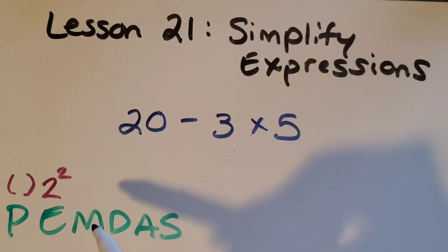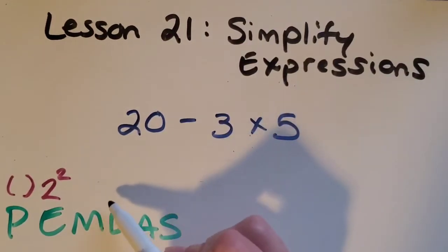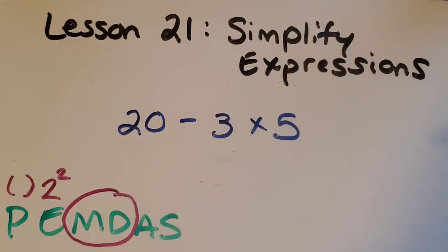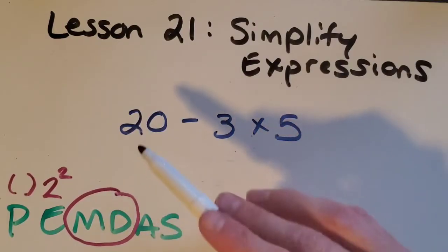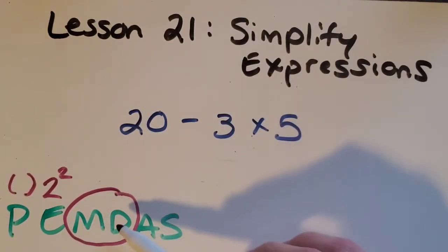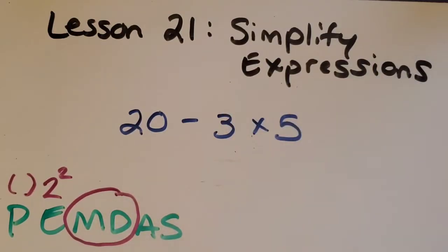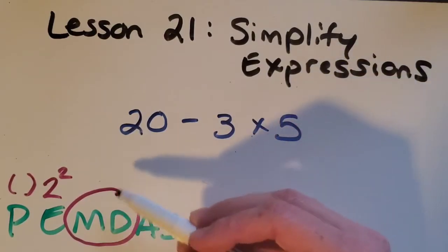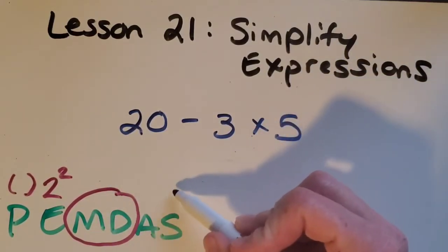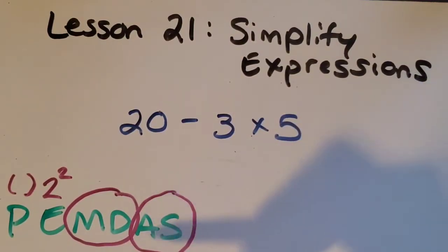Then the M stands for multiply, the D stands for divide, and these two go together. So I'm going to circle them together because sometimes you'll see multiply and divide in the same expression and you get to do whichever one comes first left to right. Then you move on once you've done all the multiplying and dividing, then you move on to adding and subtracting and those can be the same where if add comes first left to right you can do that first. If subtract comes first left to right you can do that first.